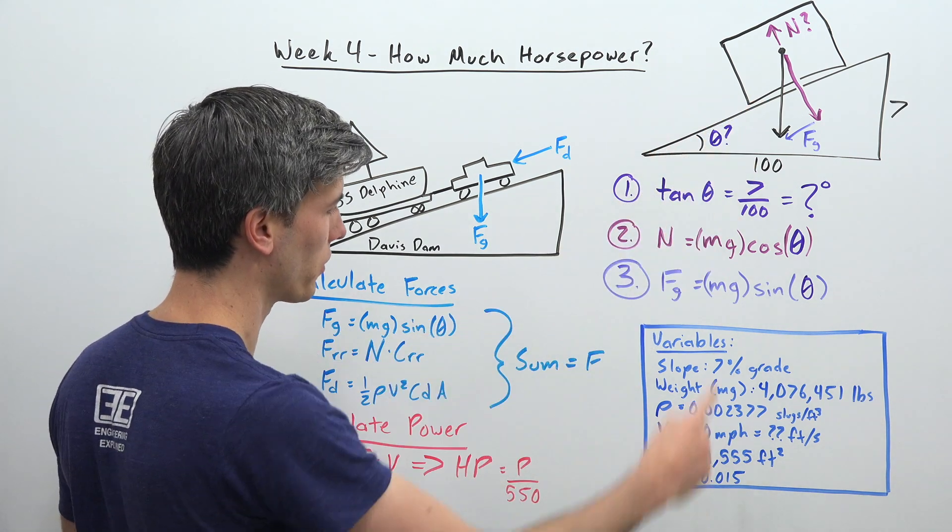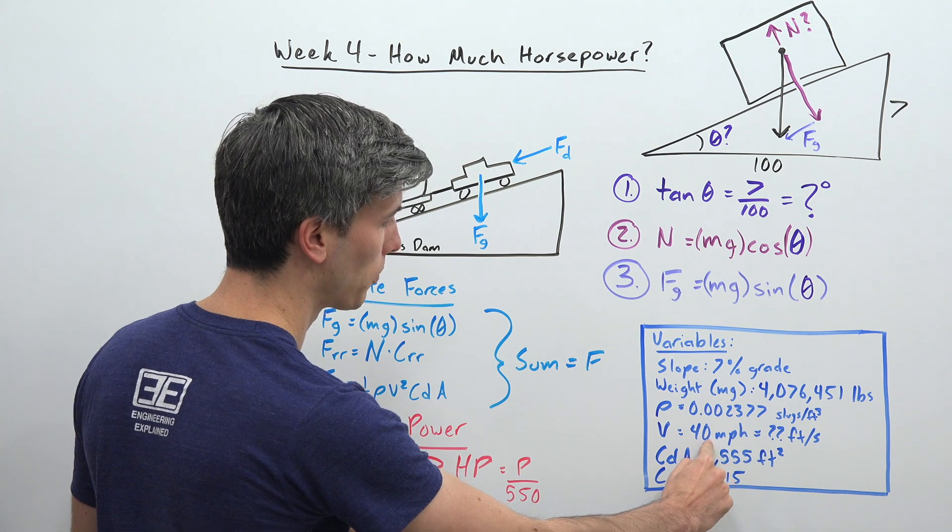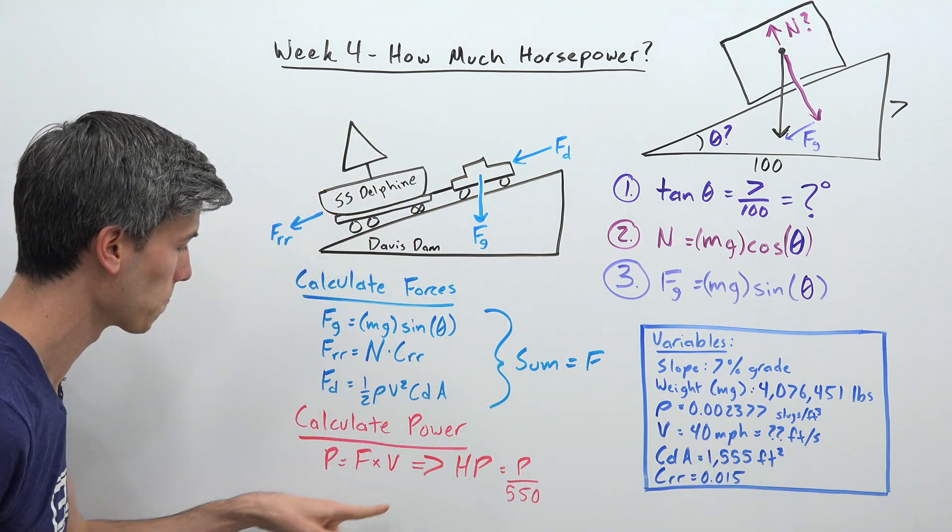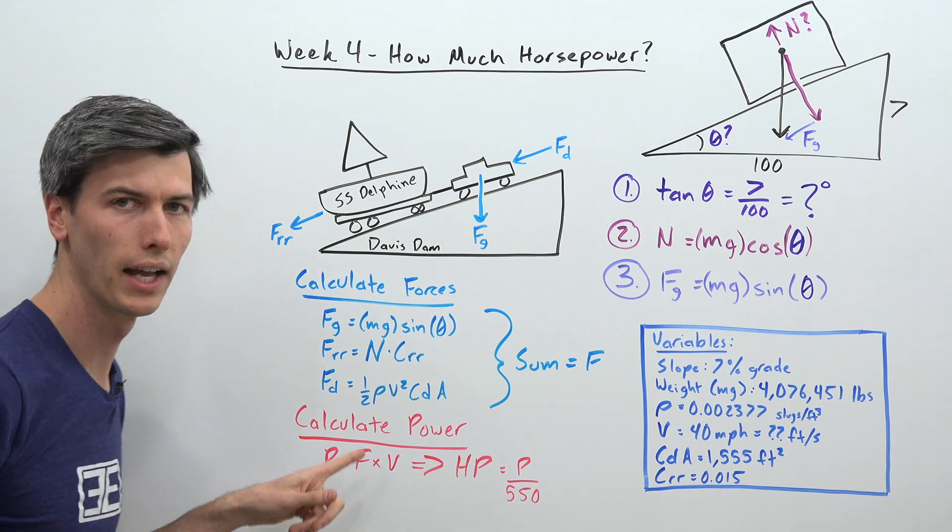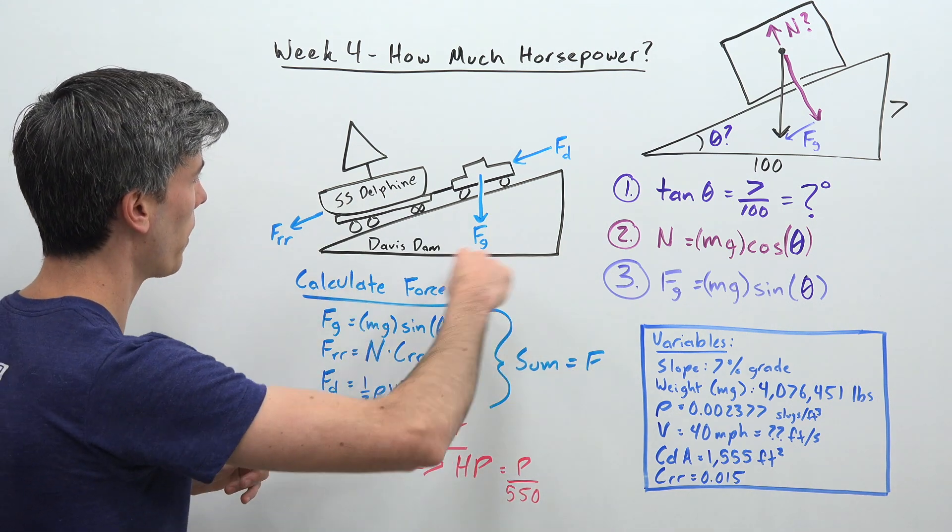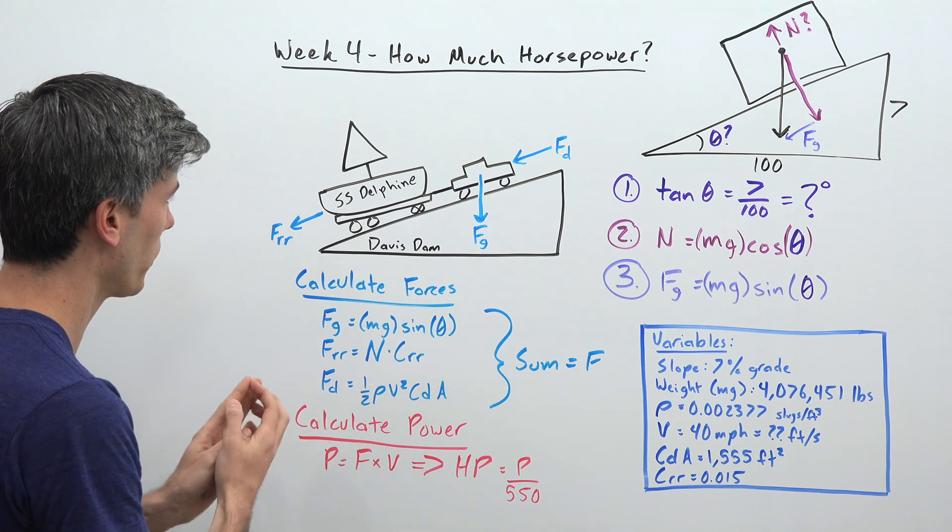We know velocity, we're traveling up this grade at 40 miles per hour. You're going to need to convert that into feet per second. So we need to calculate the force and the force is the sum of the resistive forces acting against this entire system.